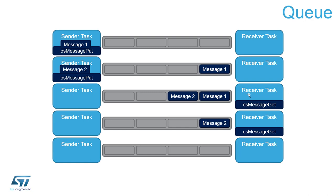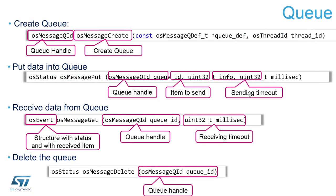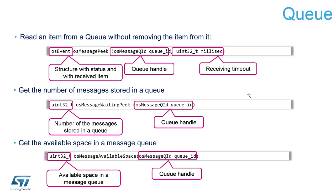The queue can also be deleted with os_message_delete. There is additionally a possibility to look inside the queue without removing the message, which is especially useful if you need to decide what to do with the data or pre-process something. The function os_message_peek looks at the first element in the queue, returns it, but does not remove it. This lets you check whether the data is relevant, and if not, another task can take it from the same queue.